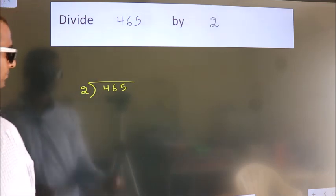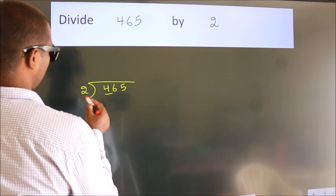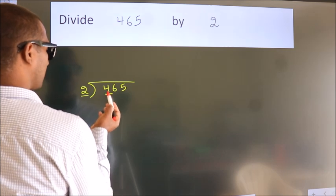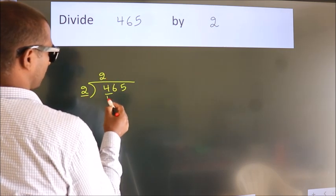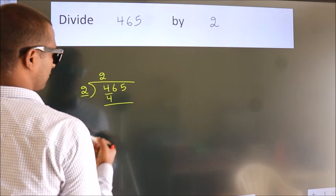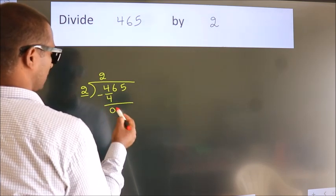Next. Here we have 4, here 2. When do we get 4? In 2 table. 2 2's, 4. Now, we should subtract. We get 0.